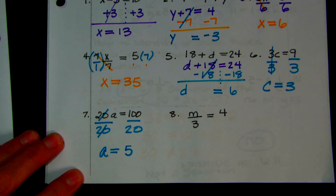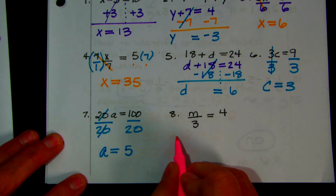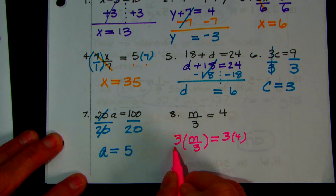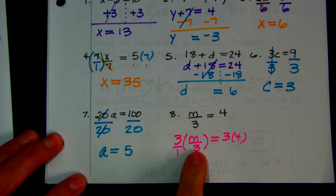Number 8: you've got M divided by 3. The inverse operation of division is multiply. So you're going to multiply both sides by 3 — you can make 3 into a fraction. Then 3 times M over 3: since 3 is in the numerator and 3 is in the denominator, they cancel, and you have 1M. And 3 times 4 is 12.